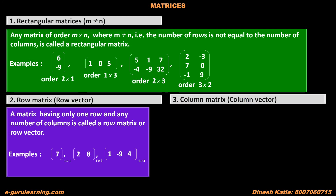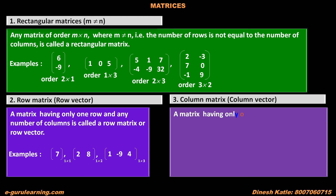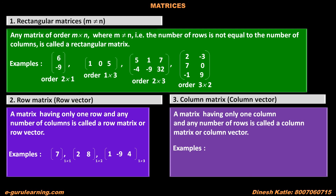The third type is a column matrix, also known as a column vector. A matrix having only one column and any number of rows is called a column matrix or column vector. The first matrix has one row and one column — since it has one column, it is a column matrix (and also a row matrix). The second matrix has two rows and one column — it is a column matrix. The third matrix has three rows and one column — it is also a column matrix.